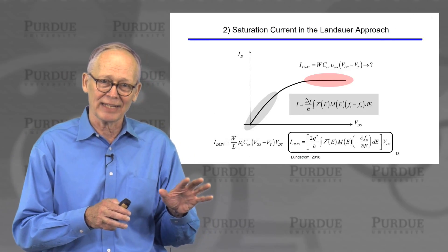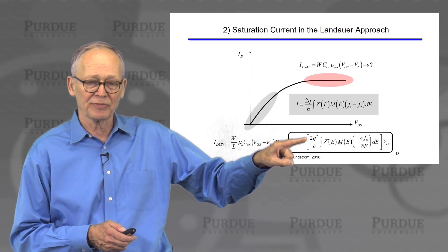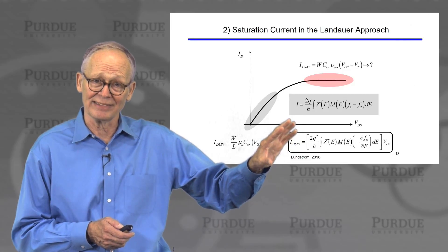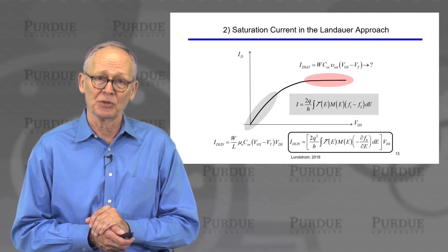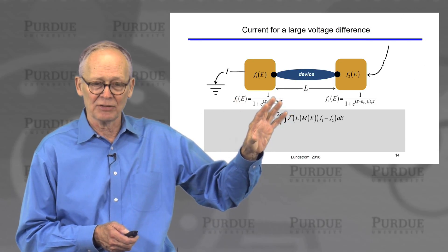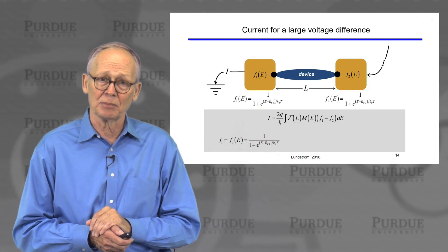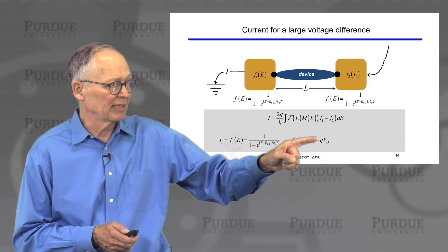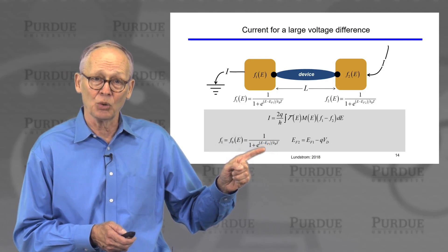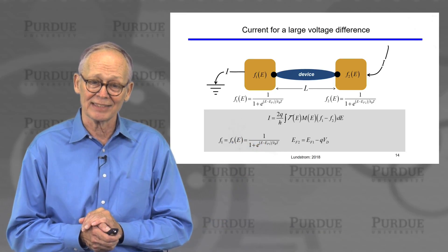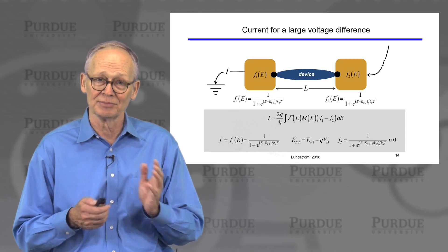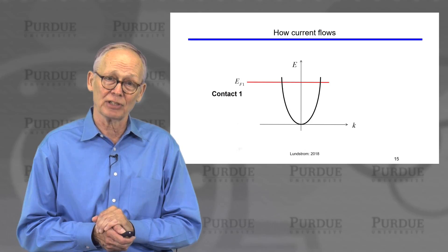Now we're back to our main task. We developed a simplified expression for the Landauer approach to low bias current through a MOSFET, and we'll evaluate that in the next lecture. For the high field region, the simplification is even easier. We assume a large bias applied on contact 2, which lowers the Fermi level in contact 2 by a large amount. This makes the Fermi function in contact 2 essentially zero, so we simply throw away F2 in the expression.